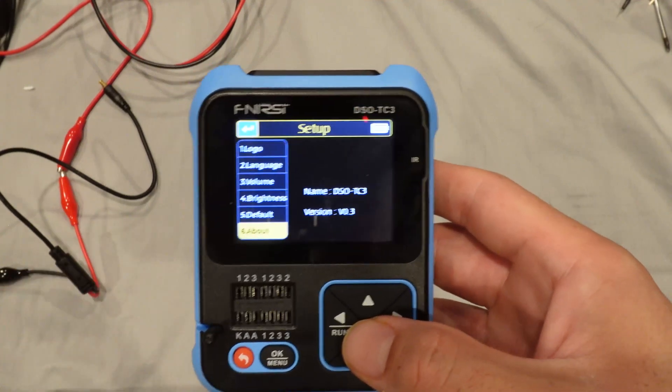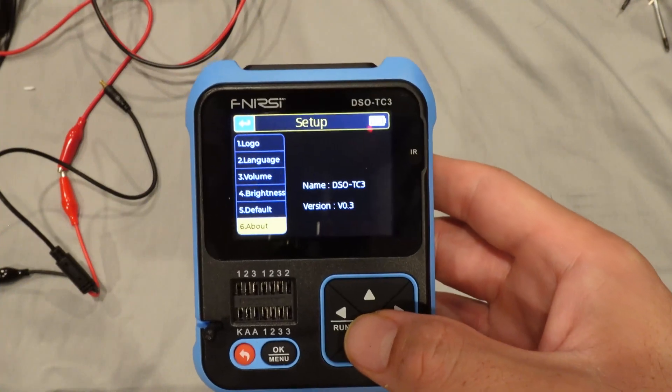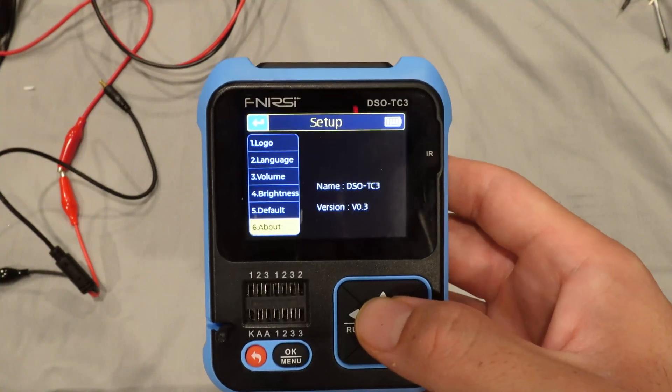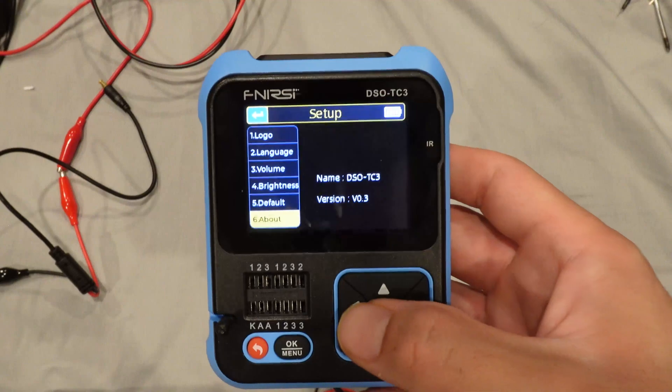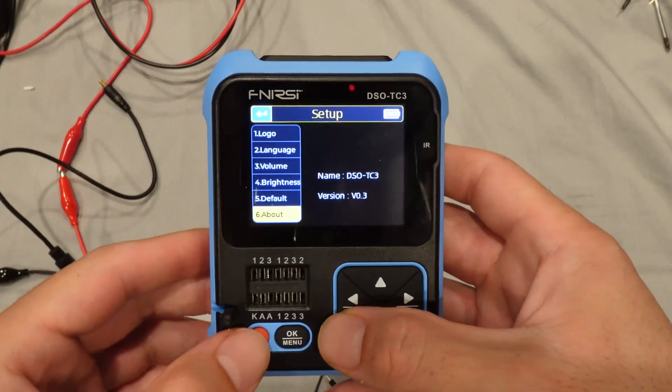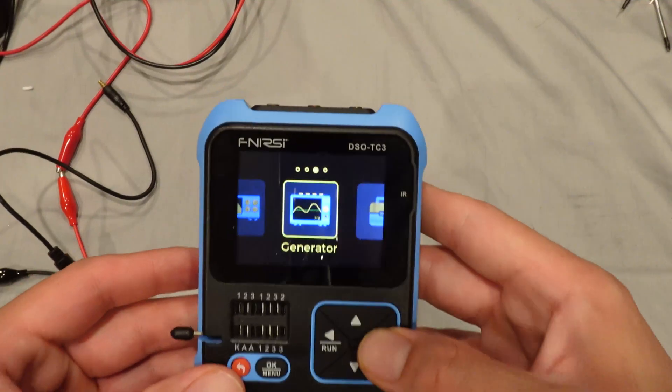And default, I think it's just factory reset, and about. You can see the name of it and the version: DSOTC 3 and version is 0.3. That makes sense. They can definitely improve the menu and the functionality of this. And that's it.